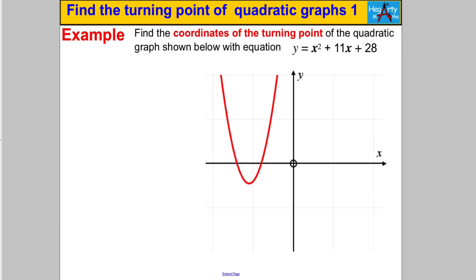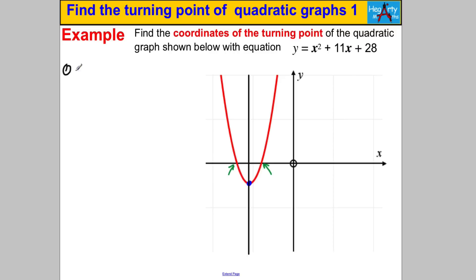If you feel like you can do it, pause the video and have a go. We need to find the coordinates of the turning point. We'll do it in stages: first, find the x-values of the roots; then go exactly halfway between those to find the line of symmetry; then substitute that x-value back into the equation to get the y-value. Step 1 is to find the x-intercepts. We know y is 0 there, so let's solve 0 = x² + 11x + 28.